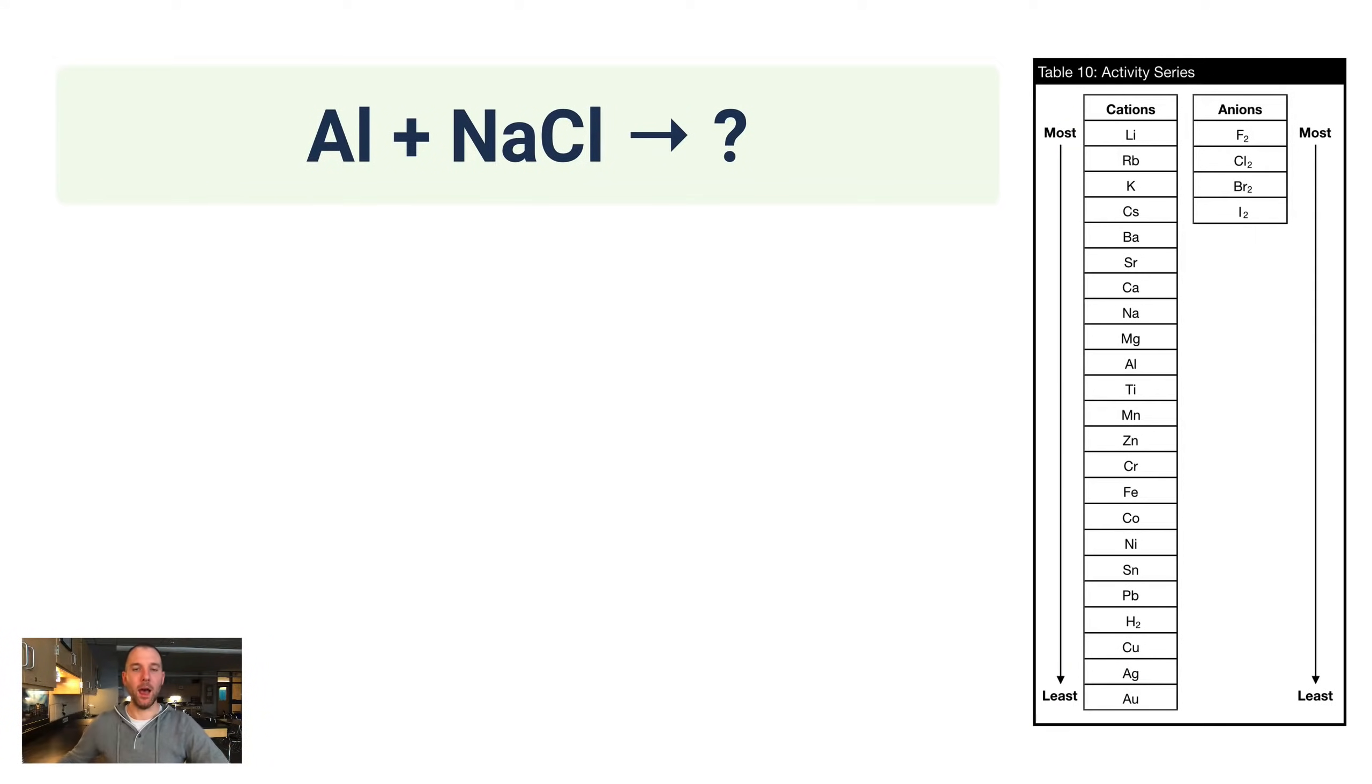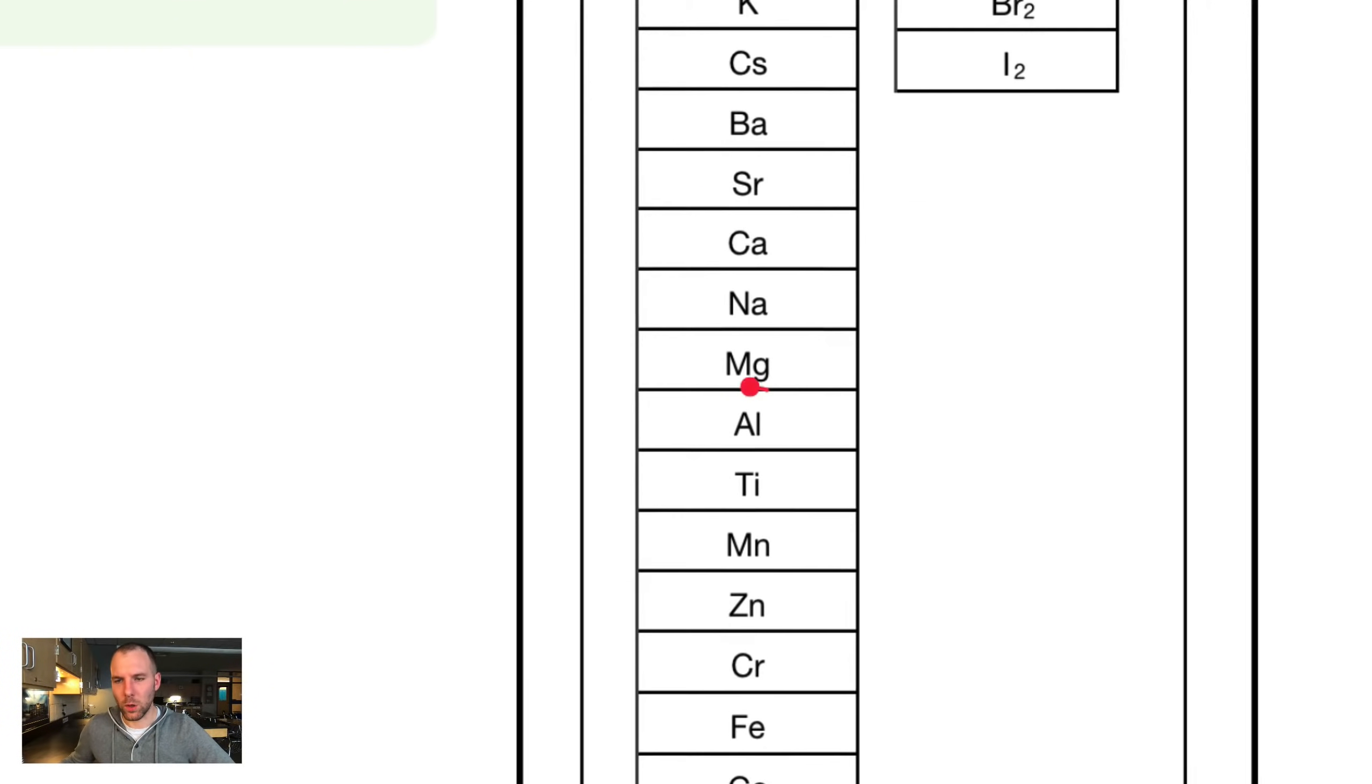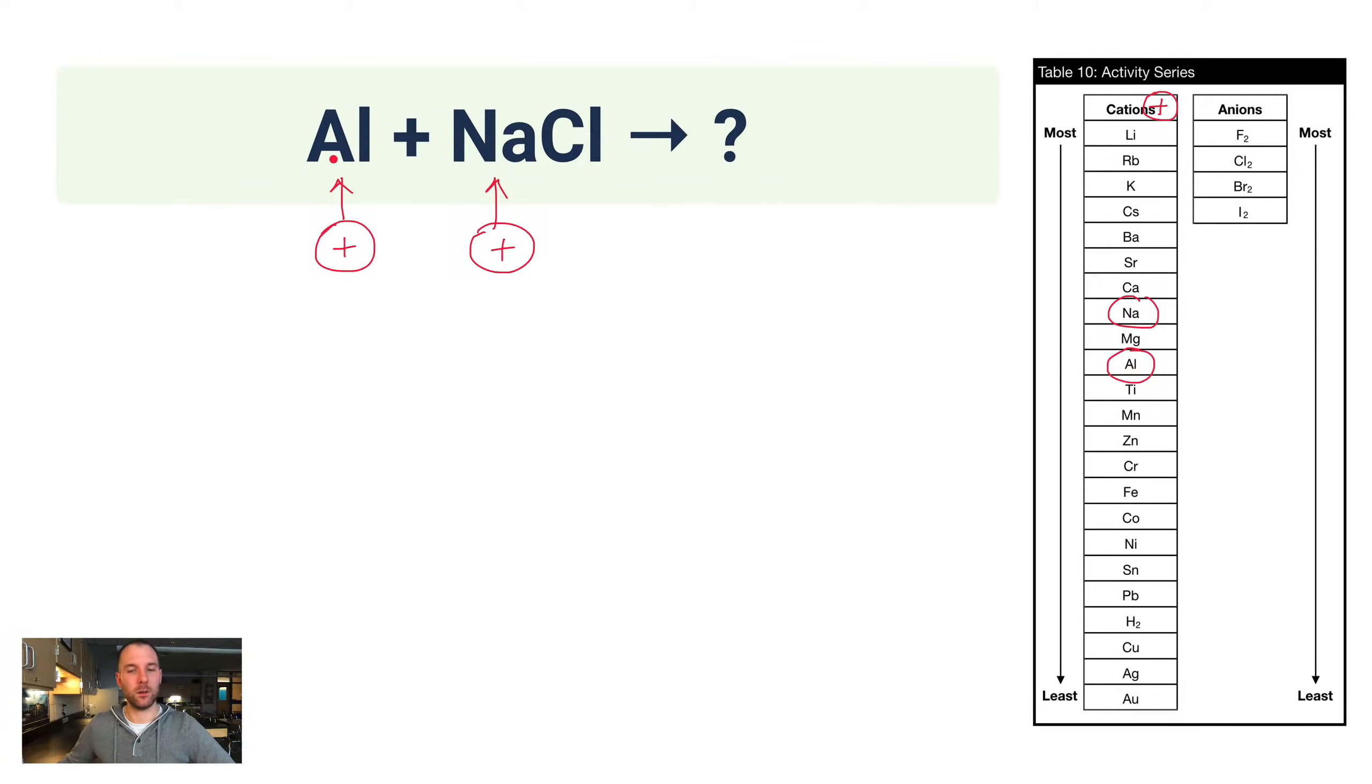Let's do this example problem. We've got aluminum potentially reacting with NaCl. Now, the first question you have to ask yourself is, is this a metal or a non-metal? Because you want to compare it against the element in this compound that it would replace. Aluminum is a metal. Metals are positive ions when they form ions. So I want to compare it against the metal, in this case sodium in sodium chloride, because both of these are positive. So I go to table 10. I look on the cations list, because cations are positive, and I'm looking for aluminum. There's aluminum, and here's sodium. Now look, aluminum is lower. It's less reactive than sodium.